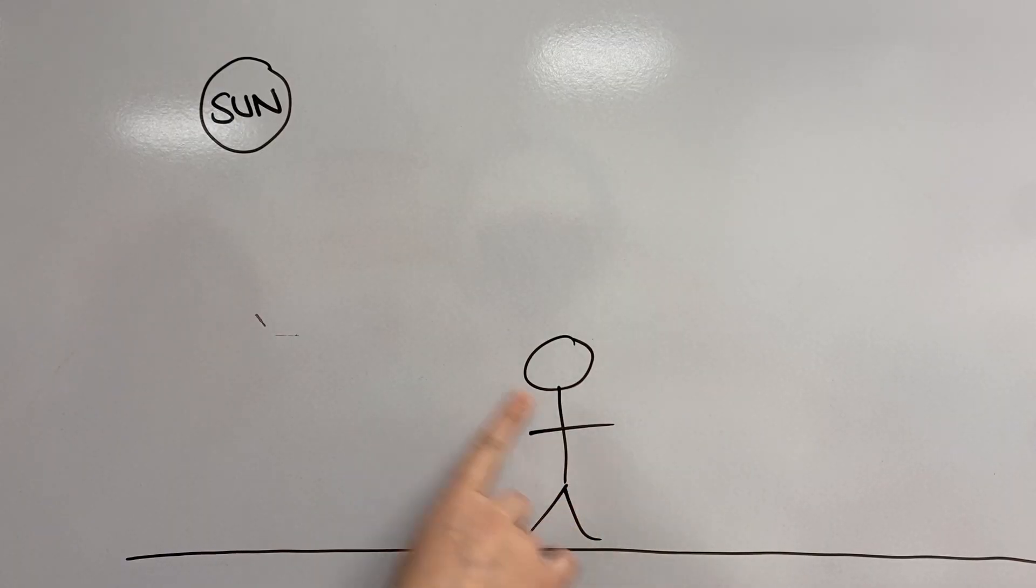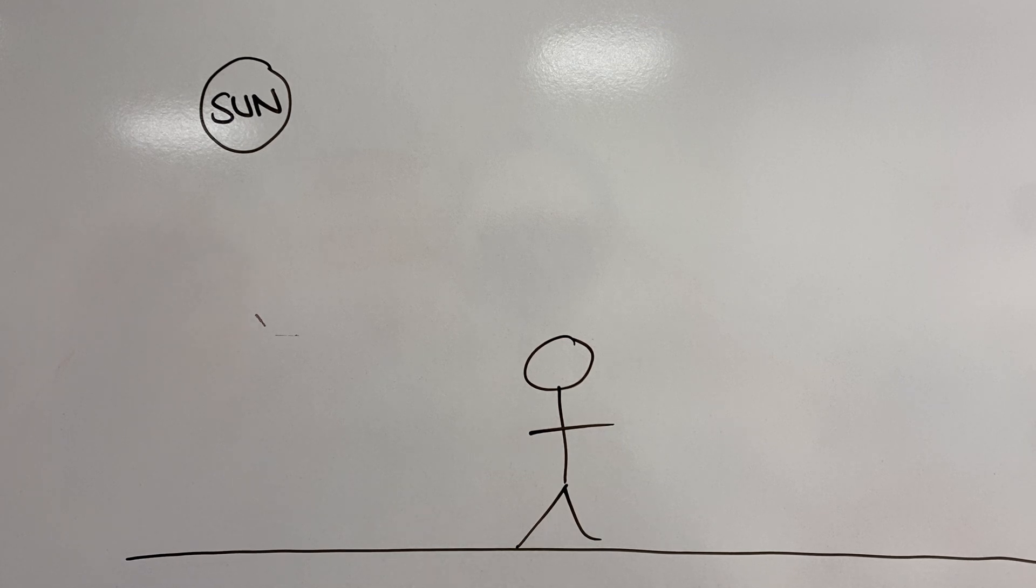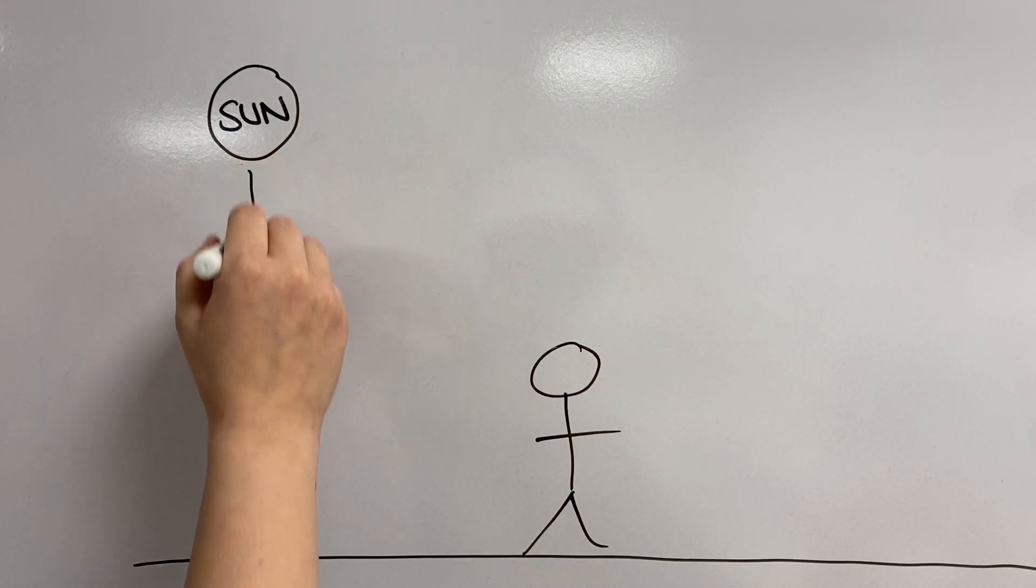So just to make sense of that, here we have Mr. Man on Earth and the sun in the sky. Now the sun emits all the colours of the visible spectrum, and we know this because we can use something called a spectrophotometer to look at the sun and see what wavelengths it's giving off. Here you can see that we have the full visible spectrum and also some ultraviolet and a lot of infrared, which obviously our eyes can't see at all.